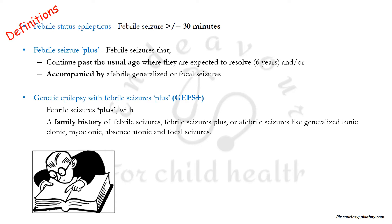There is a term known as GEFS+ — Genetic Epilepsy with Febrile Seizure Plus. It is a type of febrile seizure plus, along with a positive family history. This positive family history can be of febrile seizures, febrile seizure plus, or afebrile seizures.